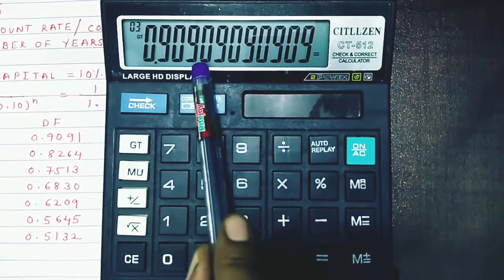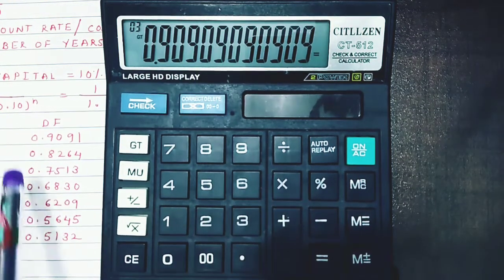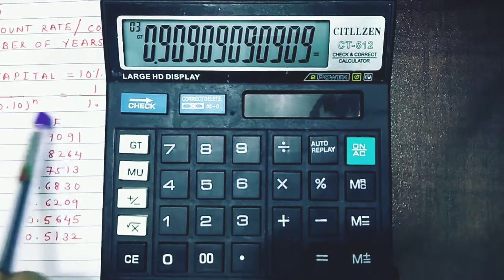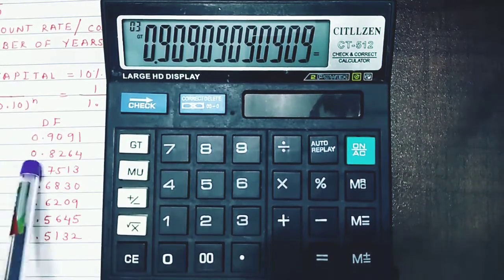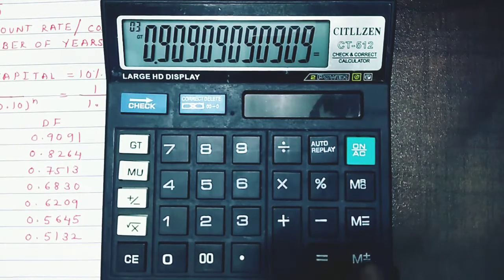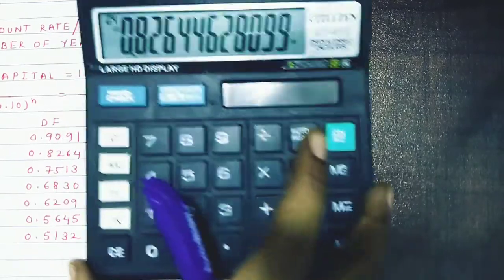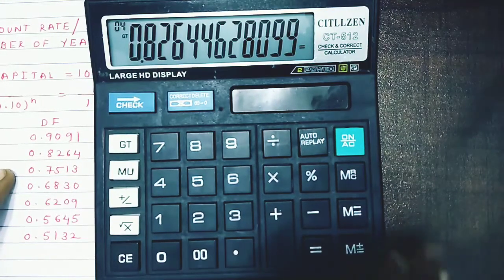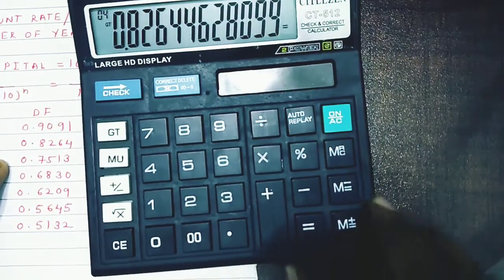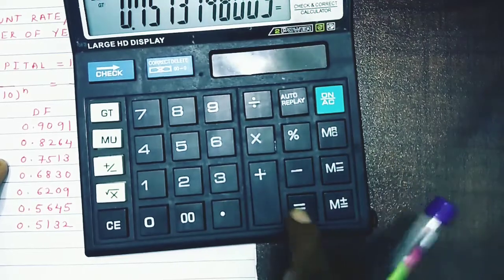we add 1 to the previous digit. For the first year, the discounting factor is 0.9091. For the second year, simply press equals to get the discounting factor. For the third year, press equals again.